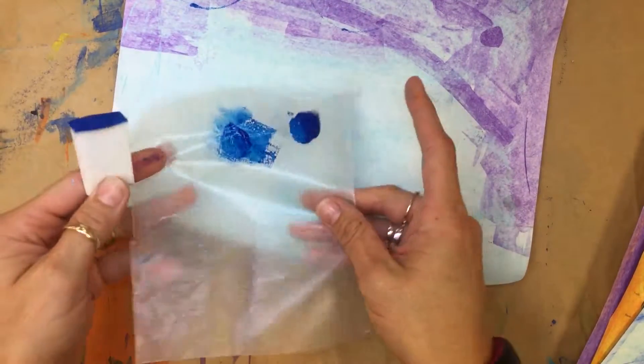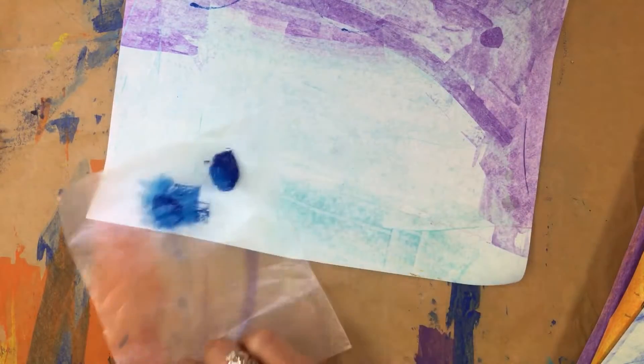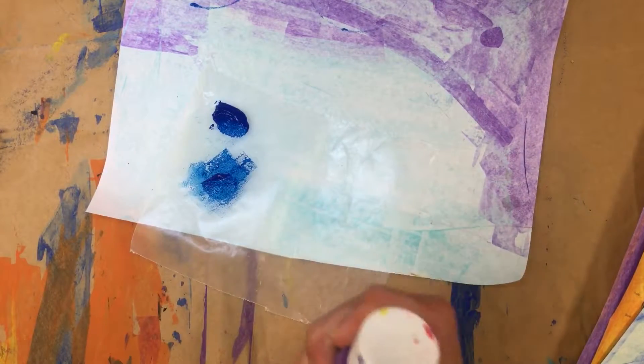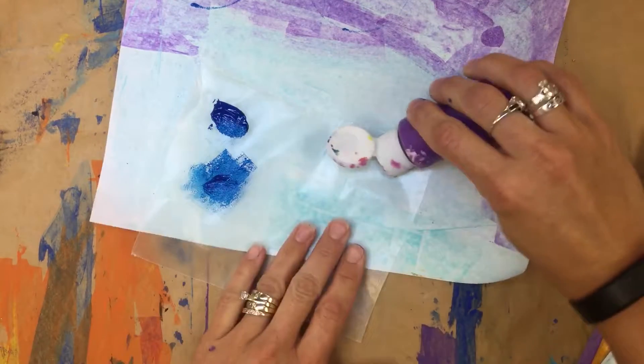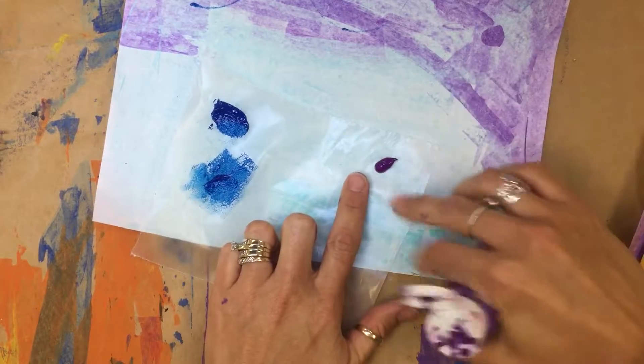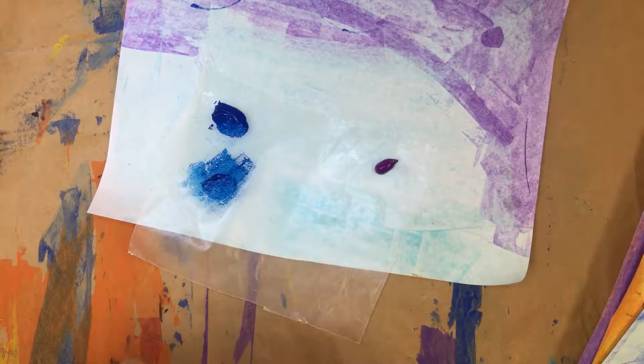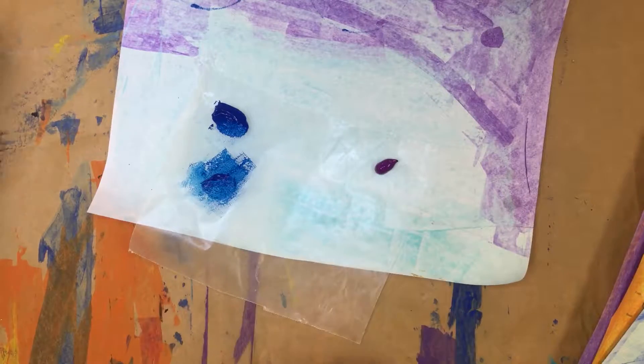You'll have a piece of wax paper for your table. As you see, I've taken a little bit of paint right here. When you take the paint, please take a very small amount because it doesn't take very much to do this. About the size of a dime or less will be perfect for what we're going to do.